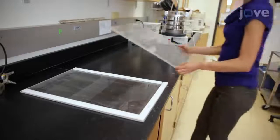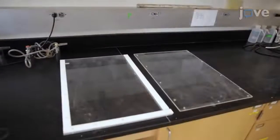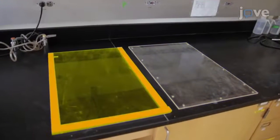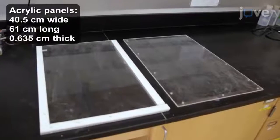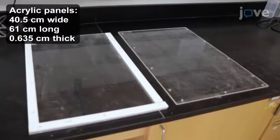Gather the parts for the rhizobox for assembly. These include front and back panels made of clear acrylic about 40 cm by 61 cm.